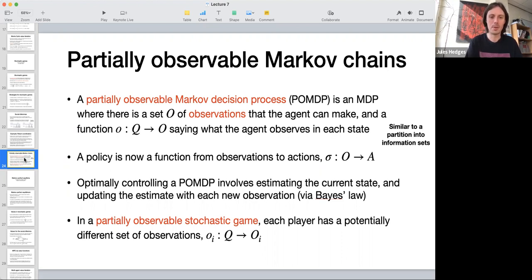There's a thing called a partially observable Markov decision process, which is usually shortened to POMDP. A POMDP is an MDP where there is also a set of observations. The agent can no longer perfectly observe the state, but there's a set of observations about the state that they can make.